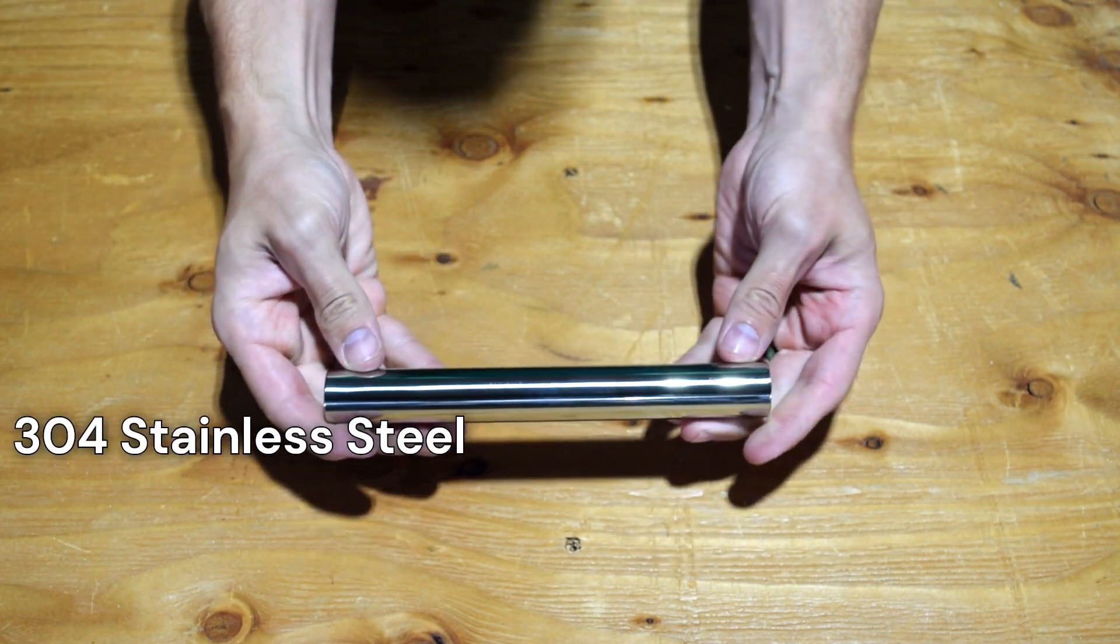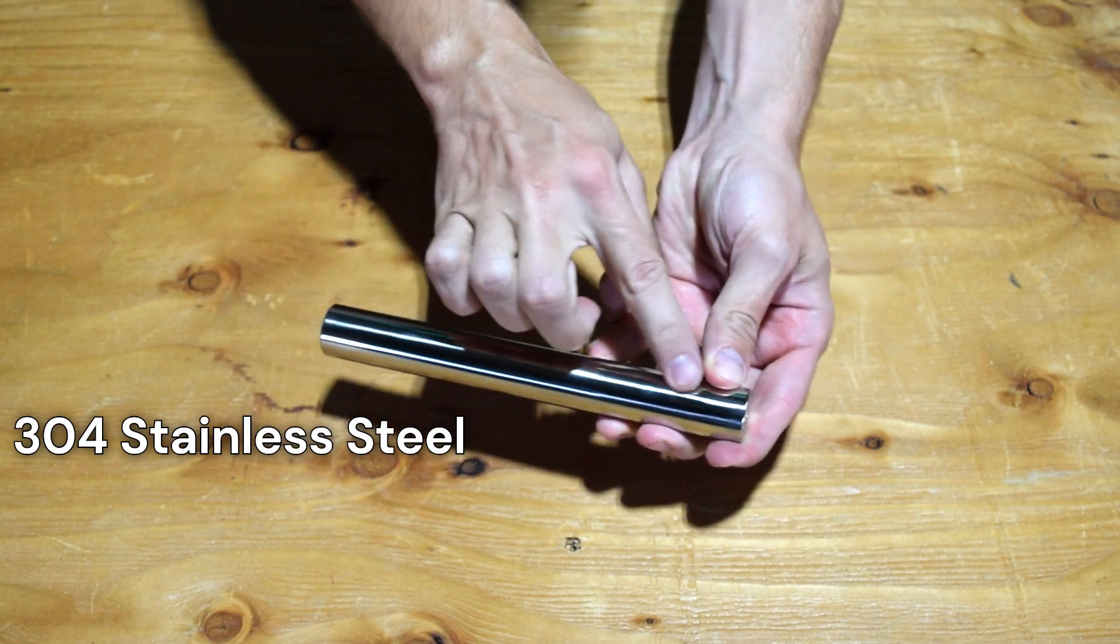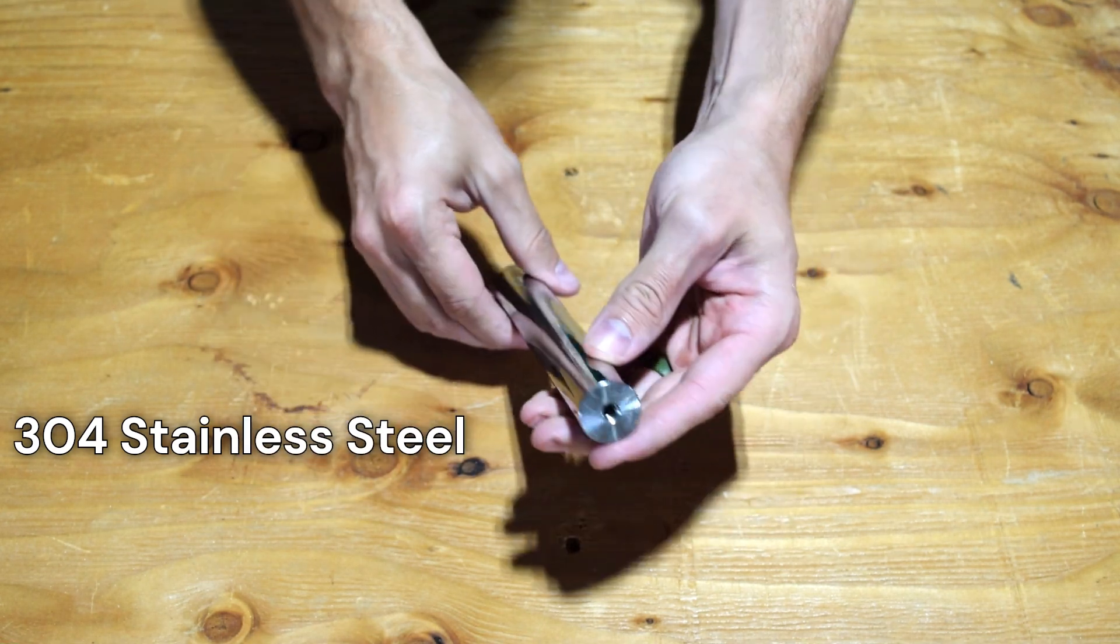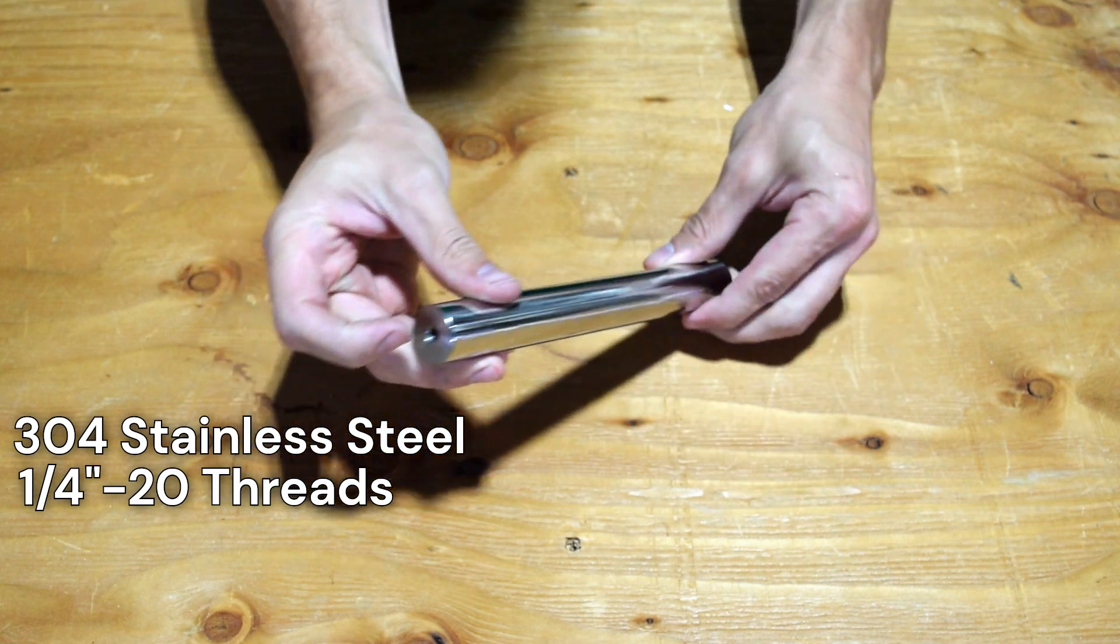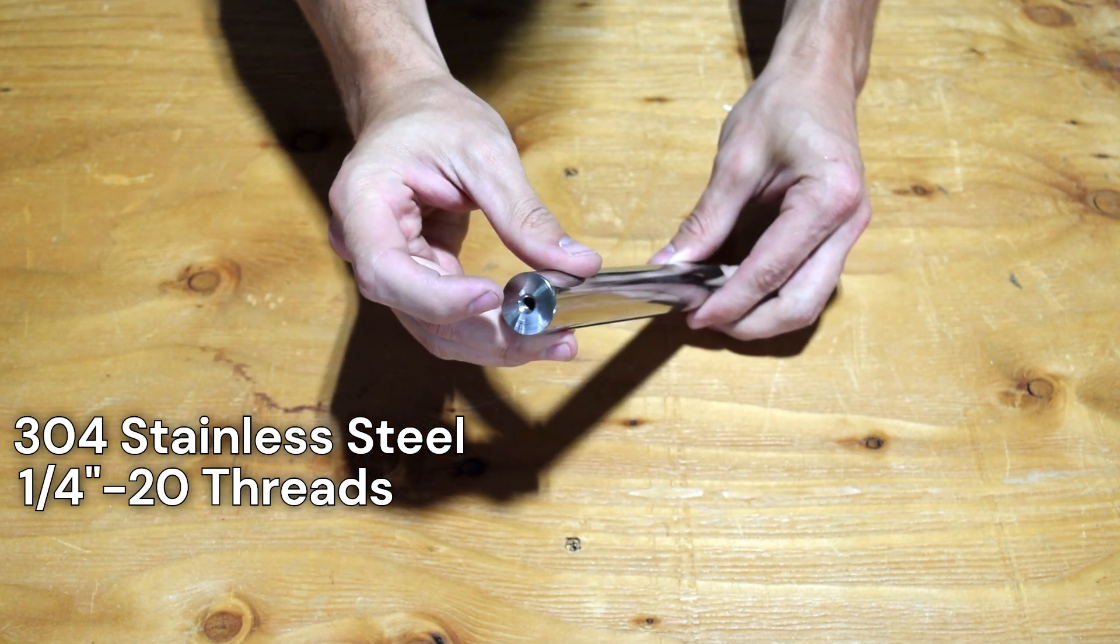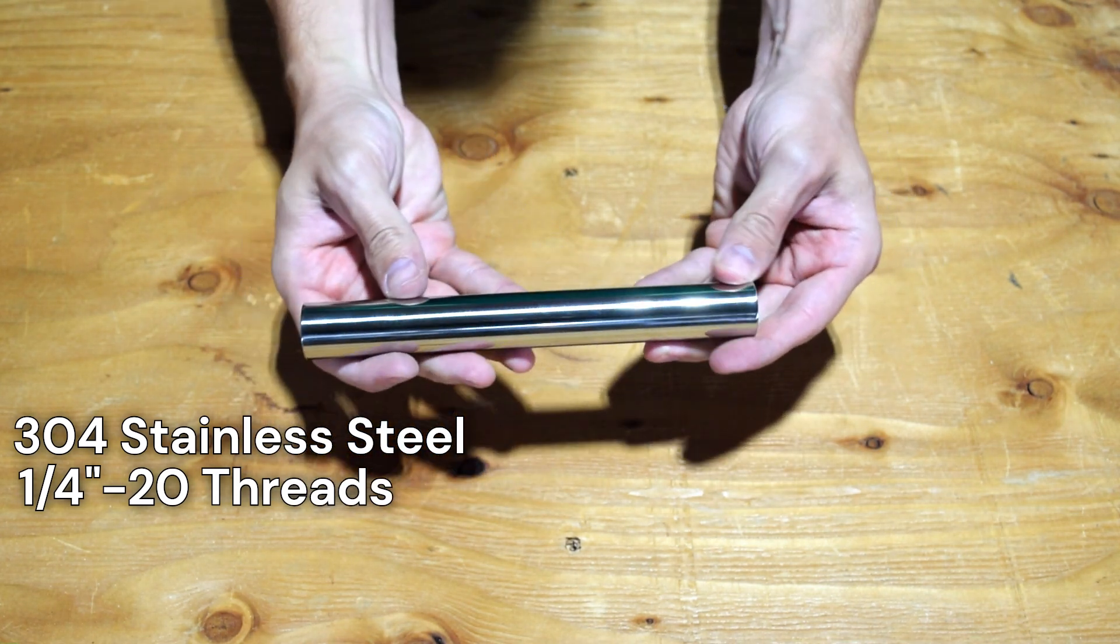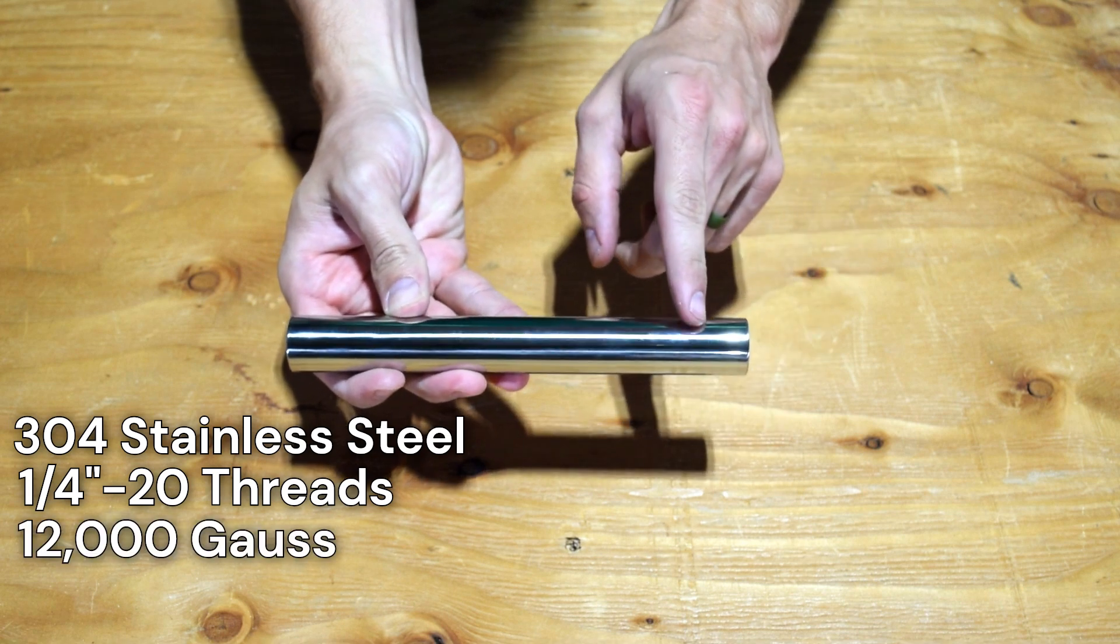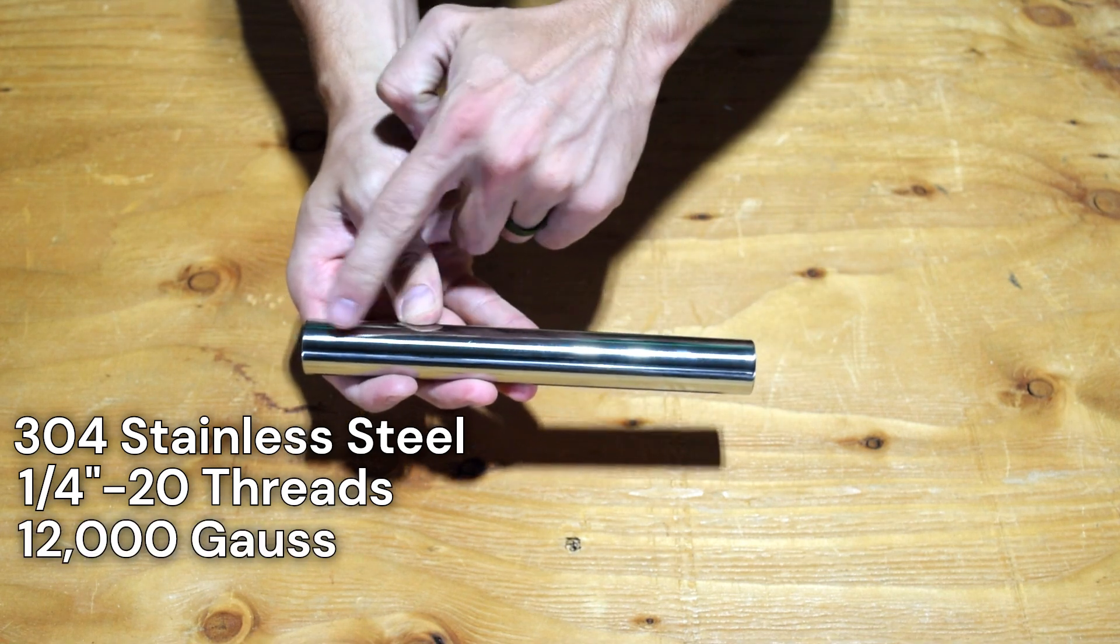These filter rods are made of 304 stainless steel, have quarter-twenty threads on either end, a uniform 12,000 gauss field strength all the way around the circumference, and can withstand up to 212 degrees Fahrenheit.